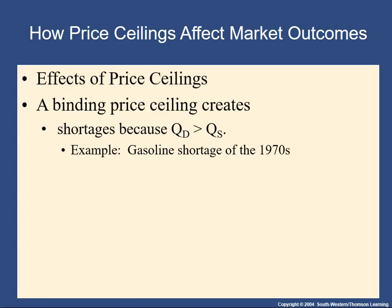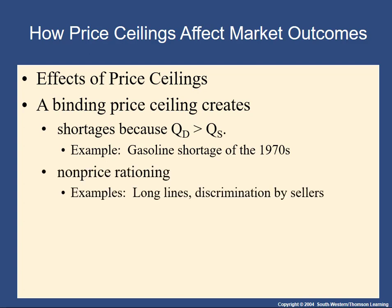When you have these binding price ceilings — a good example being the price ceilings of the early 1970s on gasoline — you end up with quantity demanded being much larger than quantity supplied. So you get long lines at gas stations, and it also invites other types of unfairness like discrimination by sellers, who must decide who to sell to when they have many customers but can't charge a higher price.